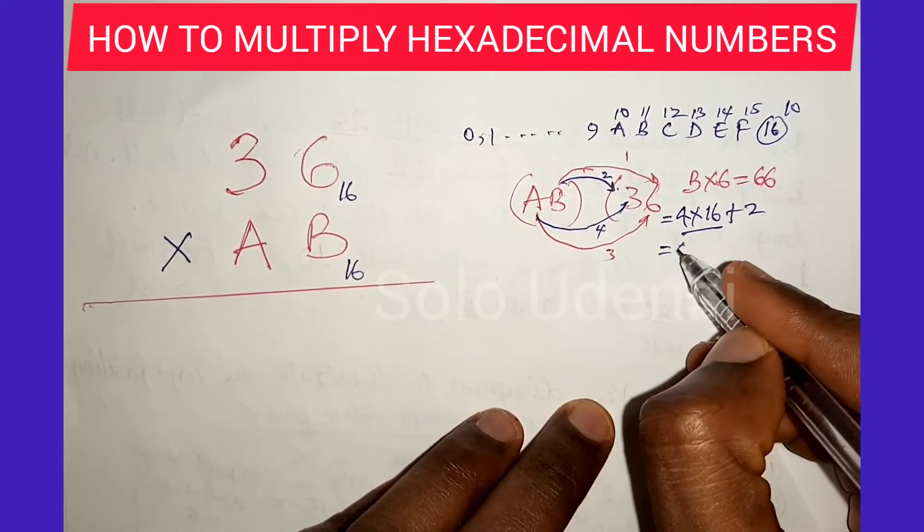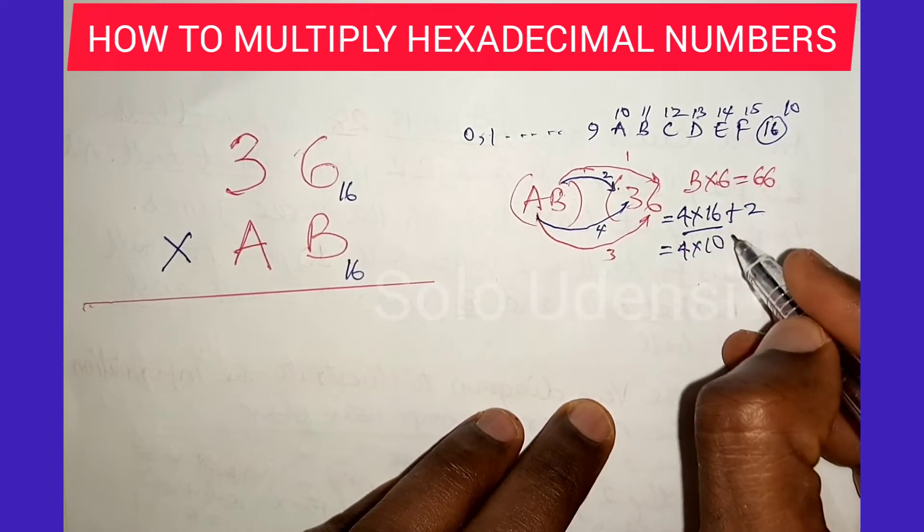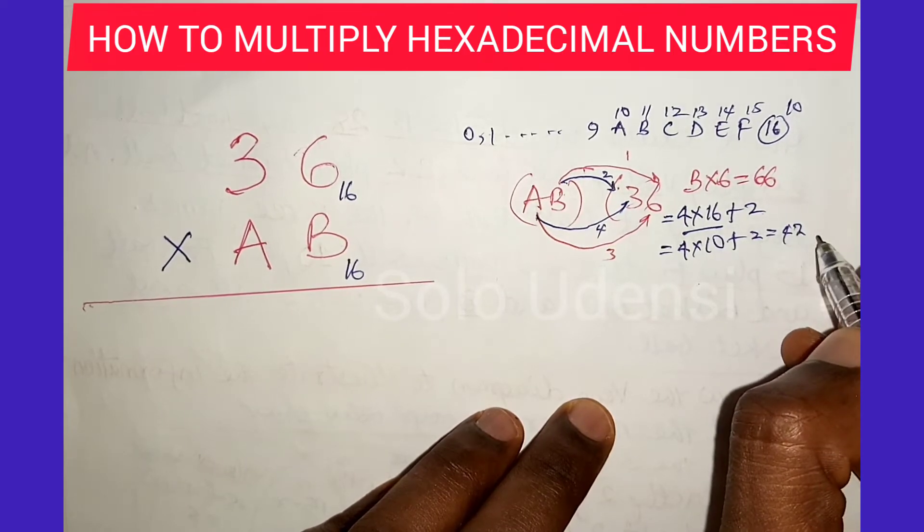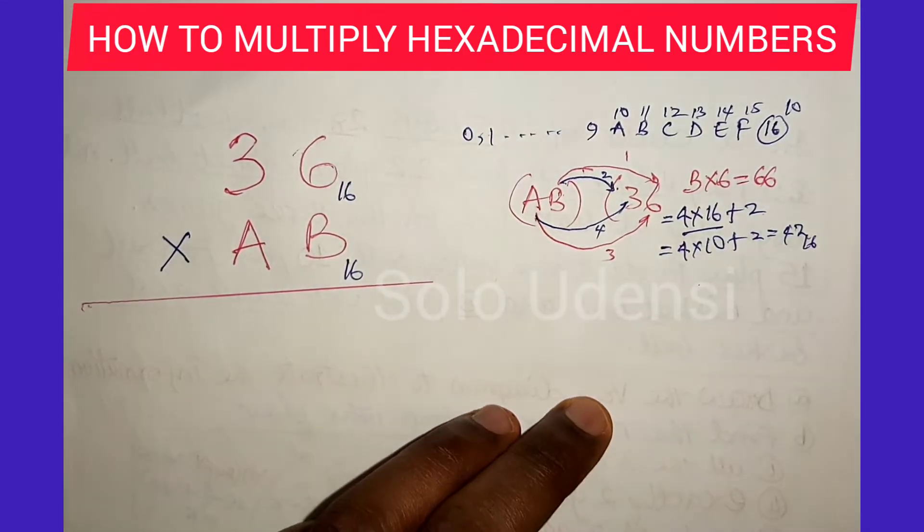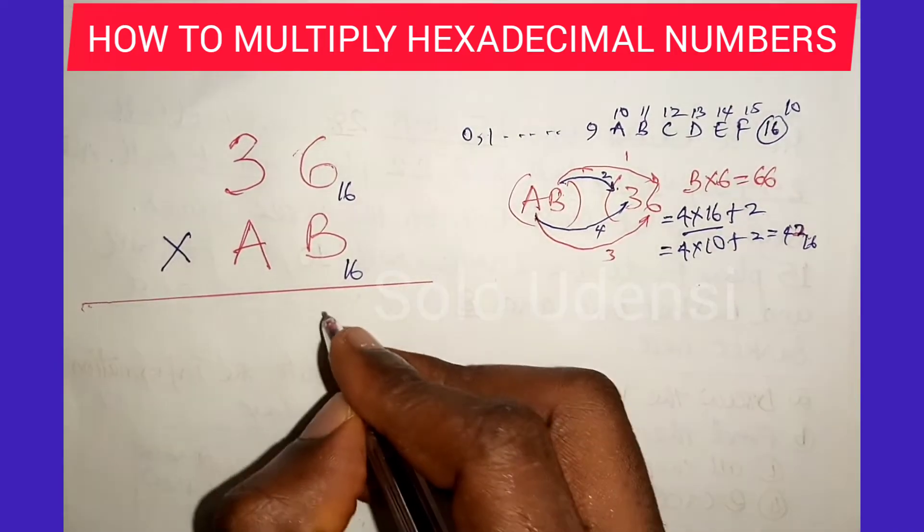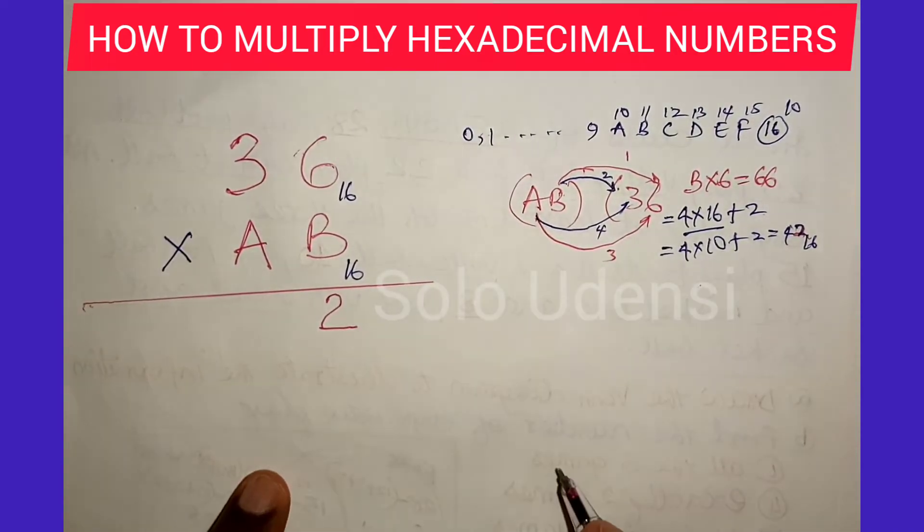So you have 4 times 10 plus 2, which equals 42 in base 16. So we write 2 and carry 4.